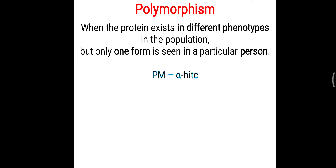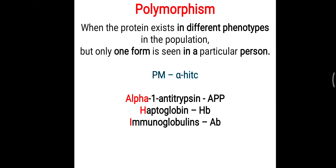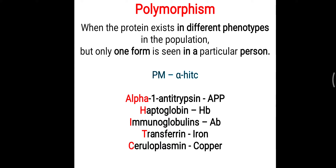The proteins found in polymorphism include: alpha-1 antitrypsin, which is an important acute phase protein; haptoglobin, responsible for transportation of hemoglobin; immunoglobulins — five different types of antibodies; transferrin, responsible for iron transport; and ceruloplasmin, responsible for copper transport.